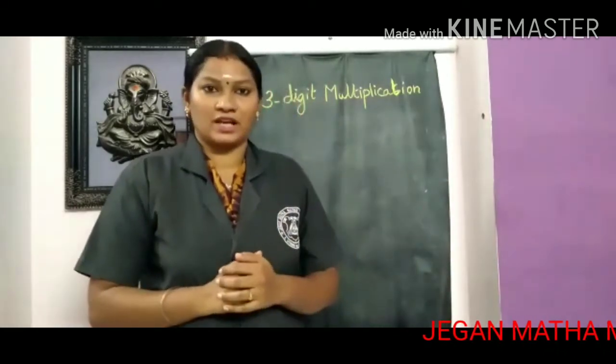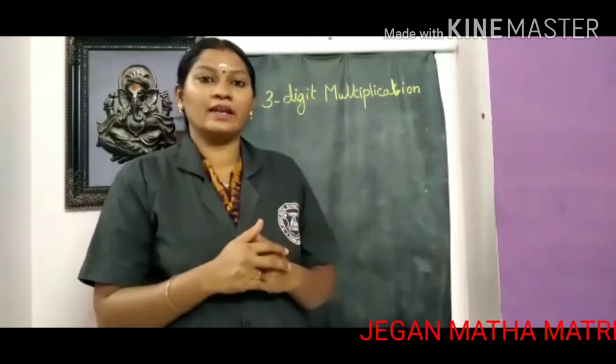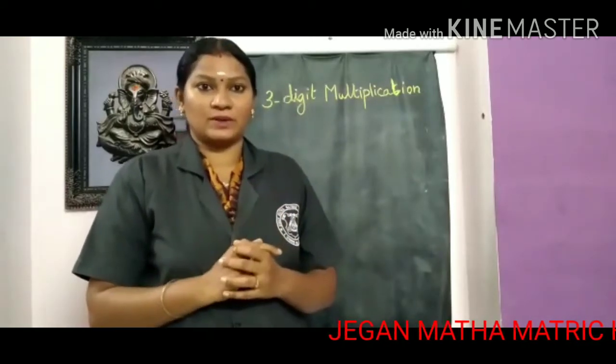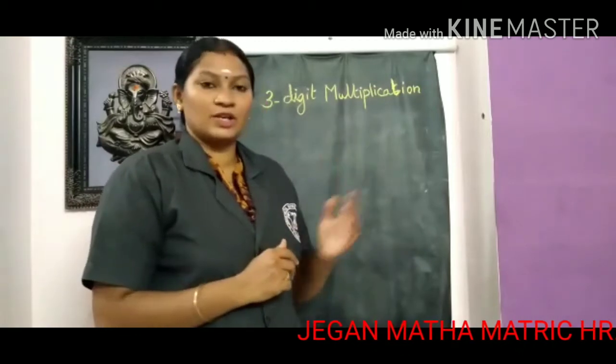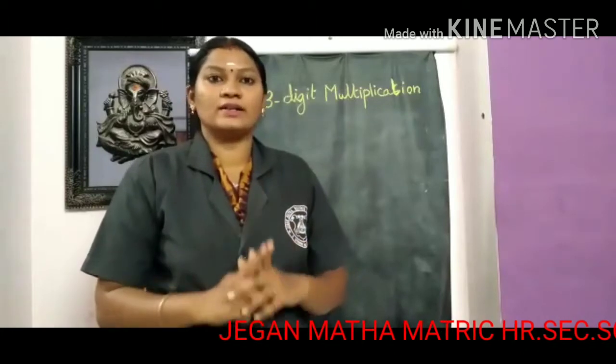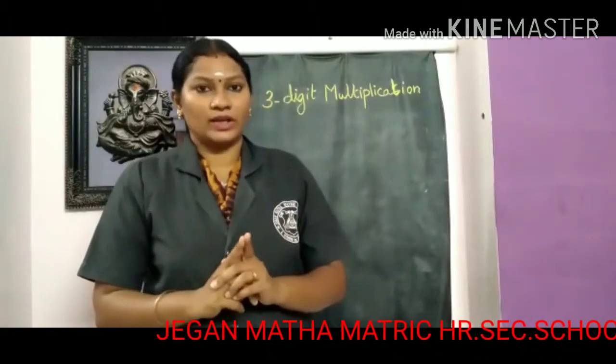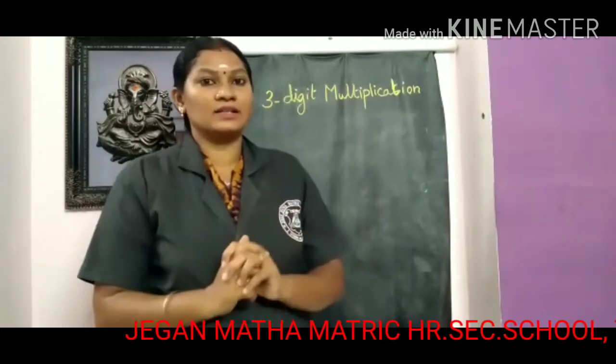Hello kids, it is class 3 mathematics. Again there is a class for multiplication — 3 digit multiplication. In this section you are all going to learn 3 digit multiplication. The first basic thing is the table, so you must all learn tables, 2 to 9 tables. Ok children, come and start the classes.